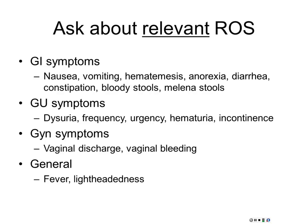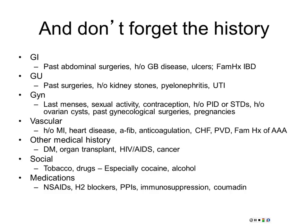Vaginal discharge and vaginal bleeding always go along as well. It's useful to take an obstetrical history and sexual activity history — not every acute abdominal problem is a ruptured viscus; consider ectopic pregnancy, molar pregnancy. Also assess for fever, lightheadedness, overall systemic evaluation. And obviously previous surgery, gallbladder disease, liver disease, past GU surgeries, and tobacco use.